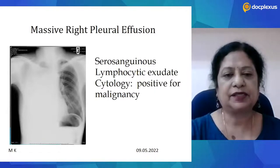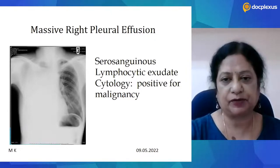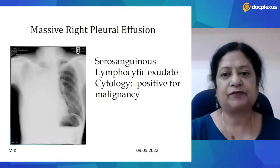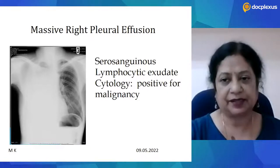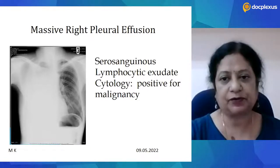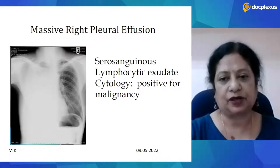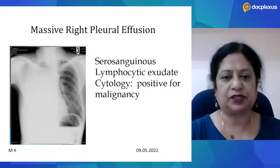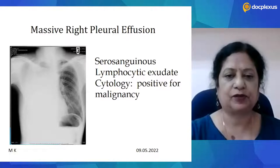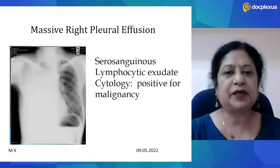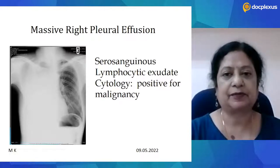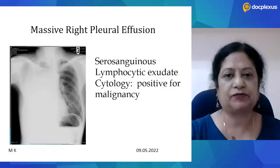This is a typical X-ray of a massive right-sided pleural effusion. The fluid was serosanguinous, a lymphocytic exudate — exudative fluid showing lymphocytic predominance. We also had a cytology that was positive for malignancy. This is typically how we detect malignant pleural effusion.